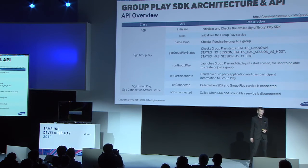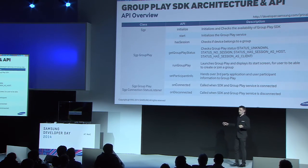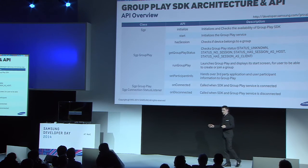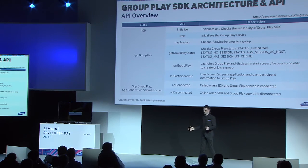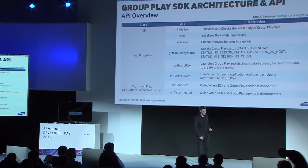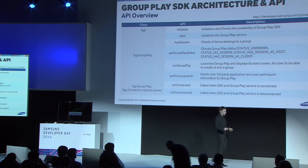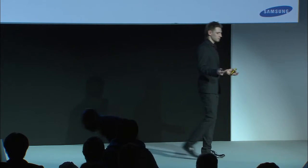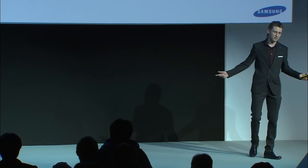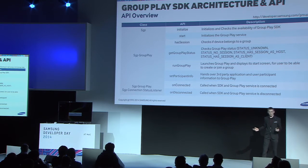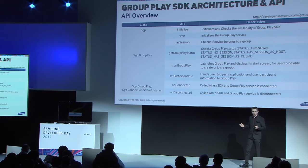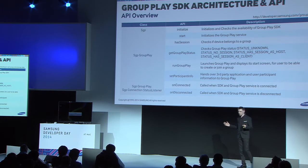Let's look at some code-related stuff. Here you have an overview of our API. It's really simple: there are two classes, one interface, and eight methods. Could it be simpler? I don't believe so.